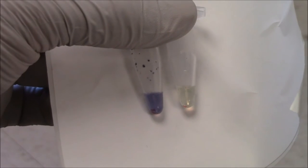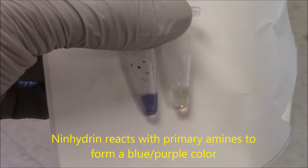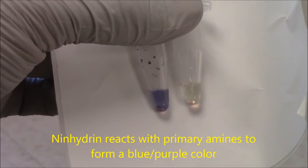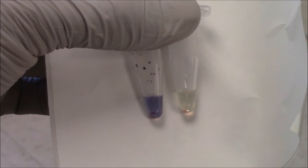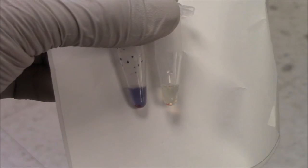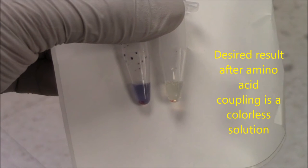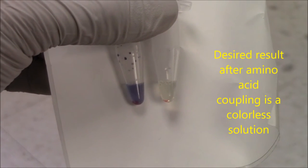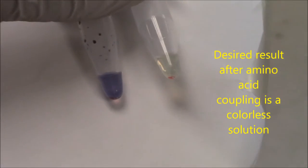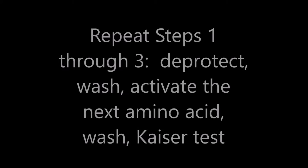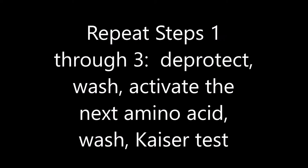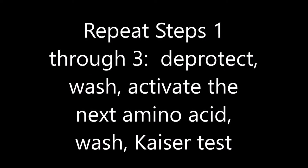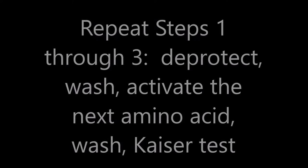Here are Kaiser test results in Eppendorf tubes. On the left are deprotected beads. On the right are protected beads. So easy to see the difference. If the activated amino acid has reacted well with the beads, then I expect to get the result on the right, the colorless result. Because all the amines have reacted with F-moc amino acids. There are no free amines to react with ninhydrin. After I've verified a successful Kaiser test, it's back to deprotection, spectral analysis, activate the next amino acid, Kaiser test that one, repeat.